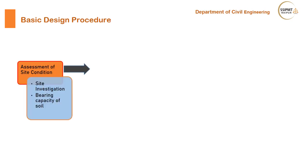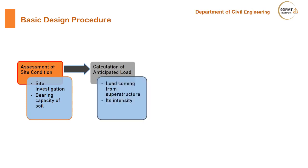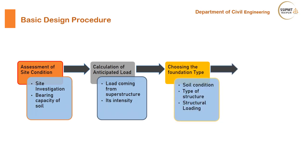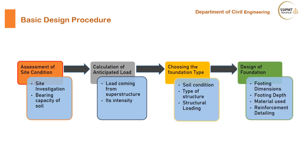The first step in the procedure for design of foundation is to assess the condition of the construction site. In the next step, you need to calculate the anticipated load on the footing. After getting this value, you will choose the most accurate foundation type from the given conditions. After completing this step, you will proceed with the design of the footing, where you will determine the area and thickness of the footing, the concrete and reinforcement material to be used, and generate their detailing diagram.